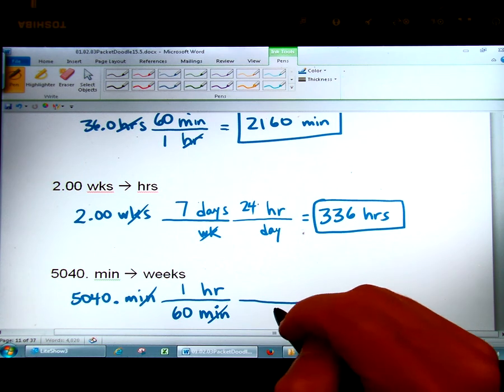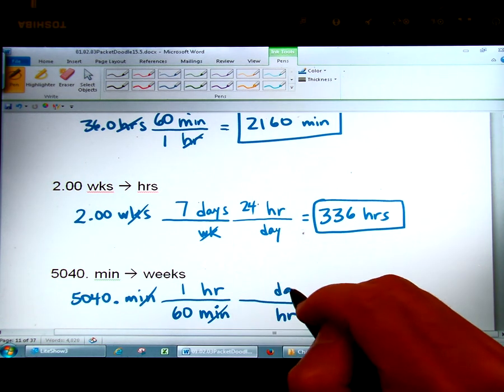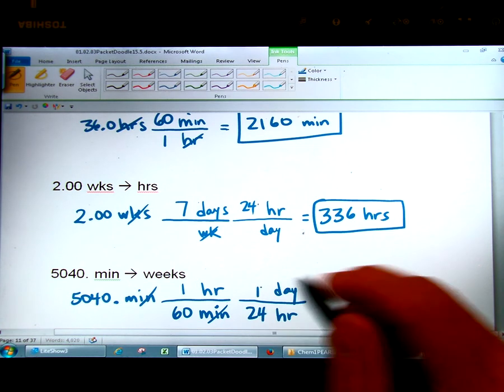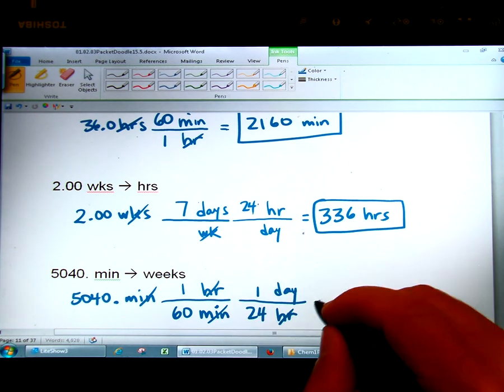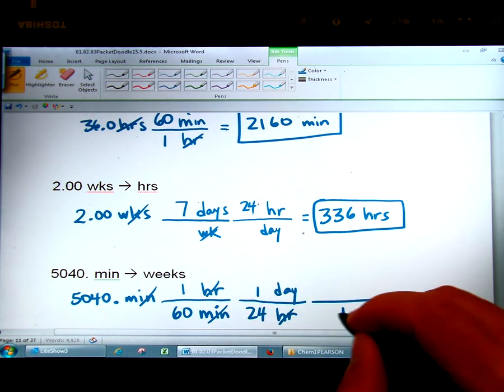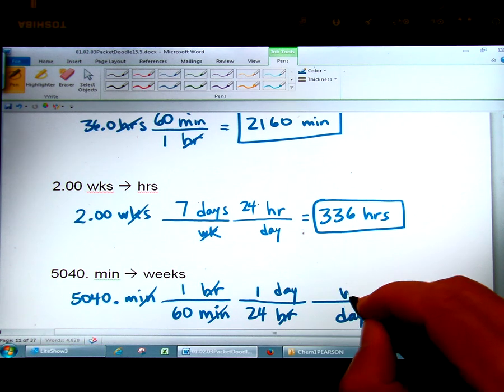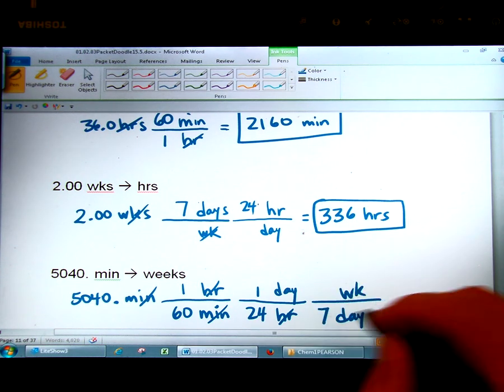I want to get out of hours. So I put it on the bottom to divide out. And I want to get bigger than hours. I'm going to go to days. And there are 24 hours in one day. So I divide out hours. And lastly, I want to eliminate days and go to weeks. And there are seven days in one week.